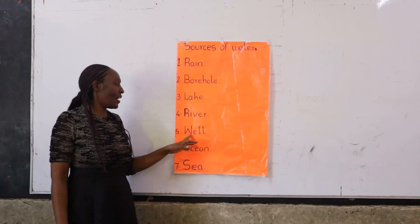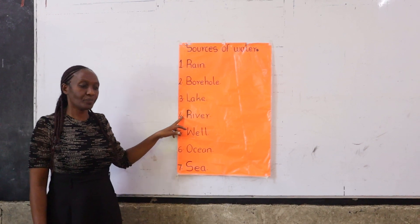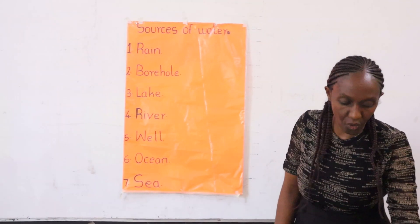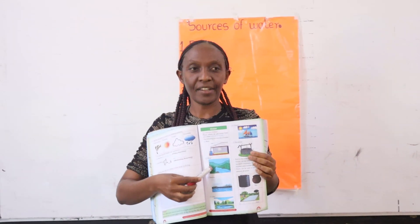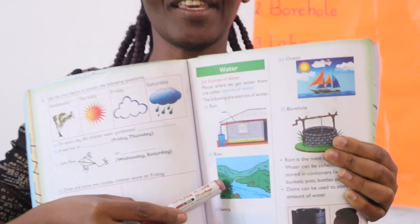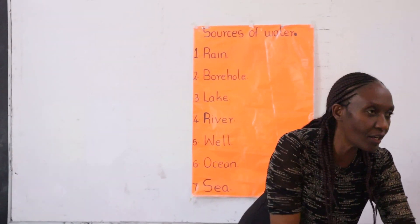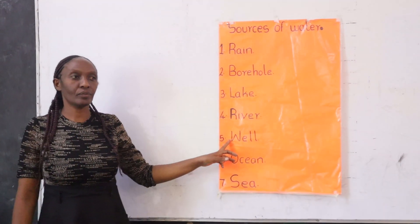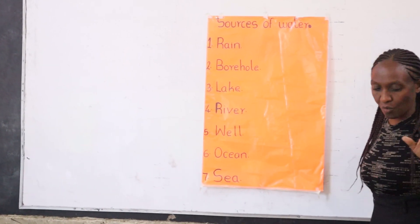Let me go to number four. We have river. Can you say river? River. Yes, river is a source of water. I have a picture here to show you a river. And then we move on to our next source of water which is well. Can you say well? Well. Well is another source of water.